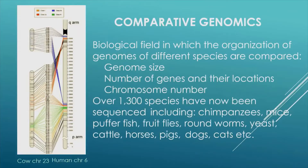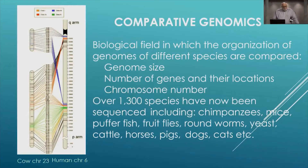With lots of genomes from other species, it's possible to conduct comparative genomic analysis. This is a biological field in which the organization of genomes of different species are compared. What is the size of the genome? How many genes are there? What are their locations? How many chromosomes are there? There are lots of questions you can ask.